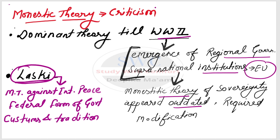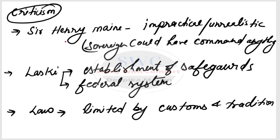When the monistic theory became outdated, criticism began and modifications were made, leading to the emergence of the pluralistic theory of sovereignty. Sir Henry Maine criticized that a sovereign can give any command — how impractical and unrealistic that is. Laski criticized most strongly, saying that absolute, unlimited, undivided power does not exist anywhere, and if attempts are made to create it, people resist and safeguards are established.